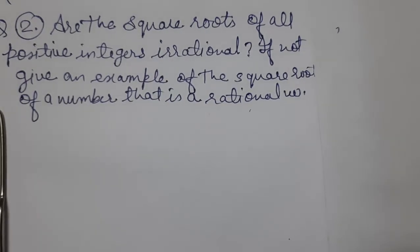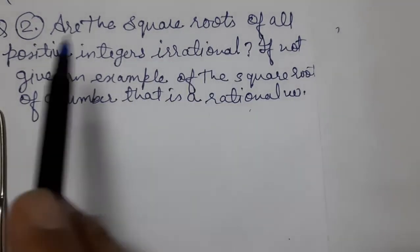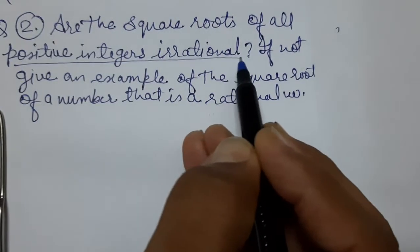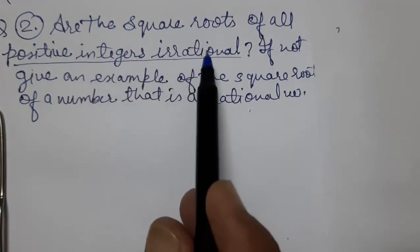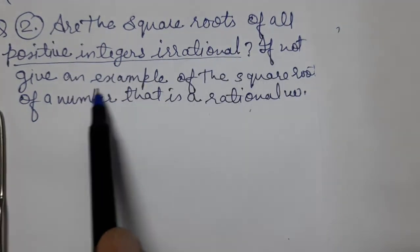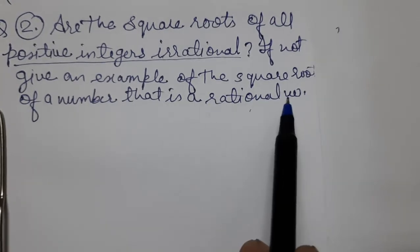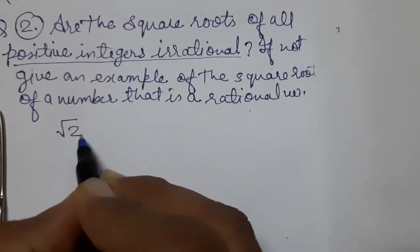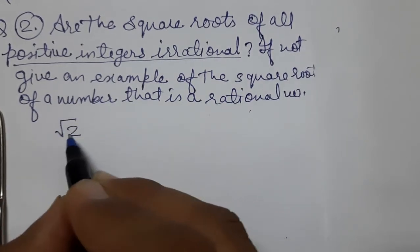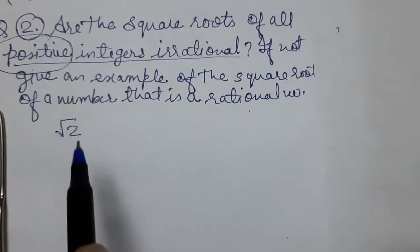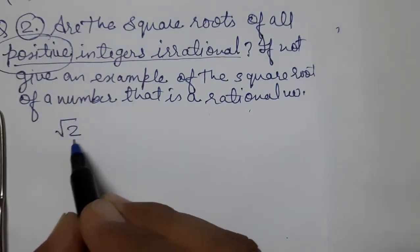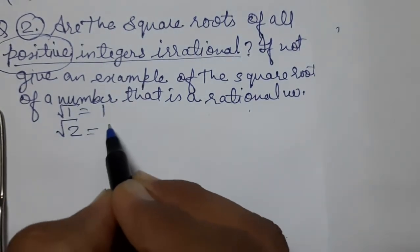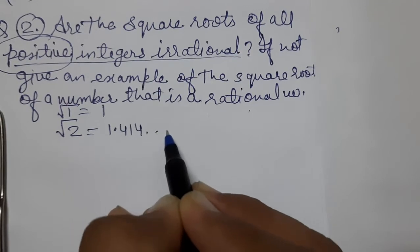Now see question number two: are the square roots of all positive integers irrational? If not, give an example of the square root of a number that is a rational number. We start with √1. √2 is 1.414 — non-terminating, non-repeating.